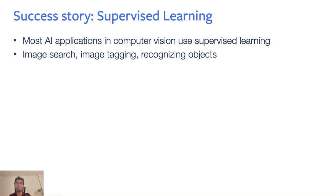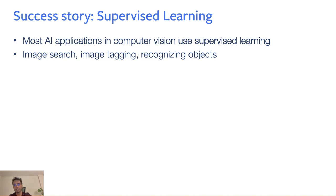One of the major success stories in computer vision, or most of machine learning, has been the rise of supervised learning. Most of the AI applications in computer vision today use supervised learning. For example, your image search engines, image tagging, or recognizing objects — the models that power most of these functionalities are trained using supervised learning.